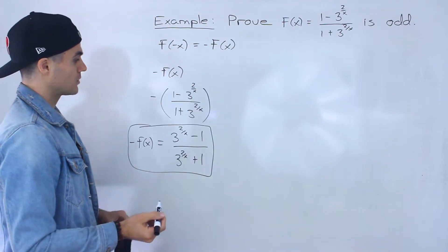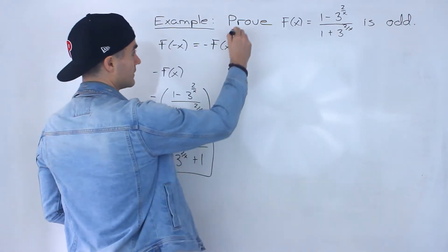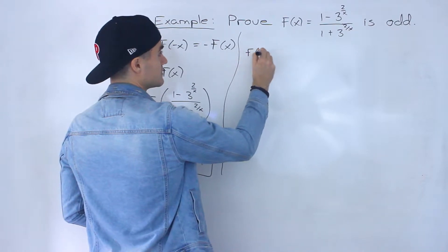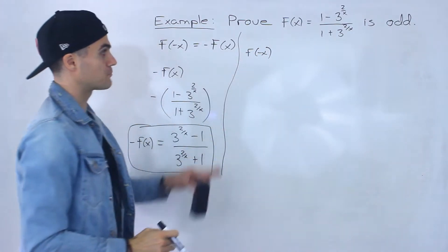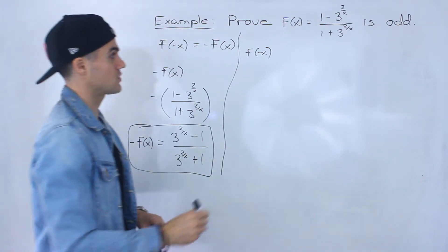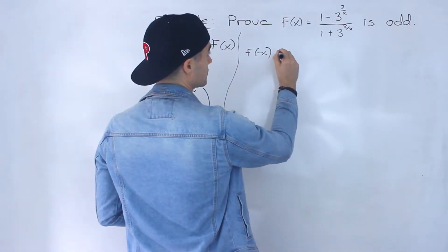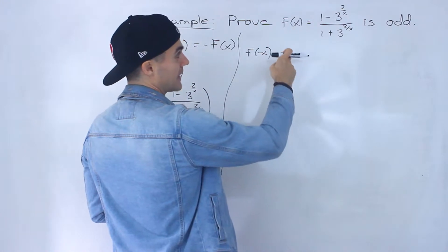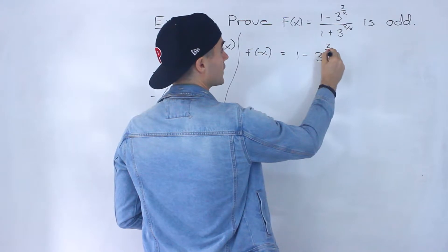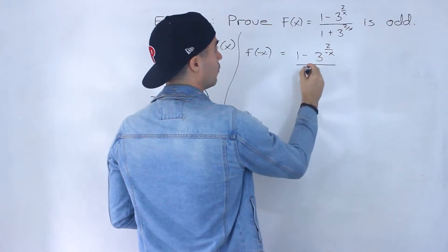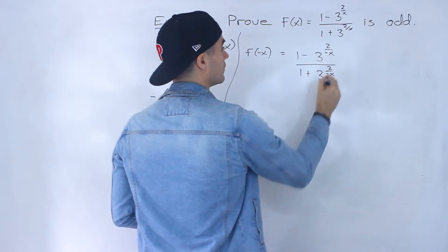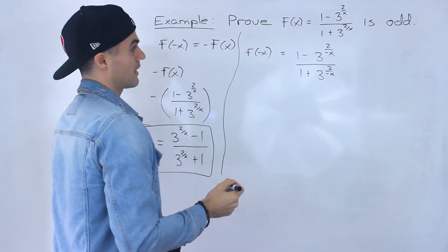Now the trickier part is getting an expression for f(-x), and we have to show that expression equals -f(x). For f(-x), we plug in -x for all the x's, giving us (1 - 3^(2/(-x))) / (1 + 3^(2/(-x))).